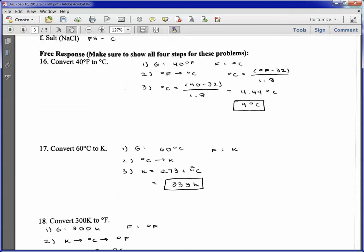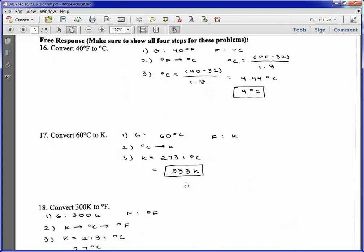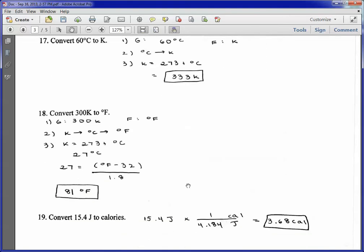Here, I'm just adding 273 plus degrees Celsius. Since I'm adding, though, I just look at decimal places. This has no decimal places. This has no decimal places. That should have none as well. Scrolling down, this is going to be a two-step problem. I go from Kelvin to Celsius, then to Fahrenheit. So the first step, I get 27 degrees Celsius, and then I convert one more time. Remember, since my final step is going to be to add 32 degrees, I need no decimal places since I'm adding. So that's why it's 81 degrees Fahrenheit.